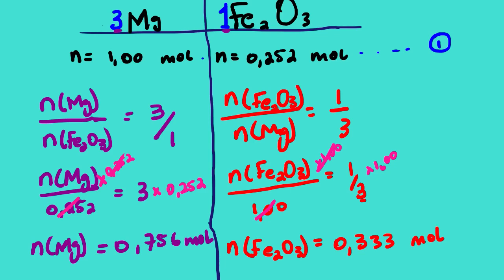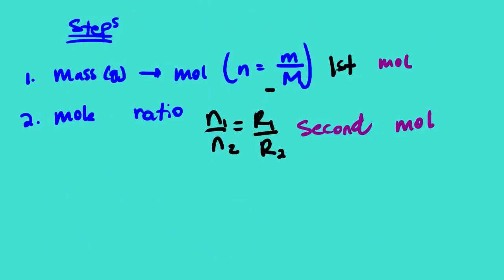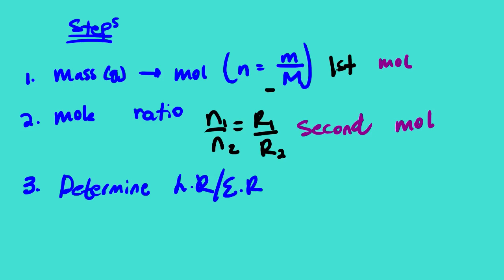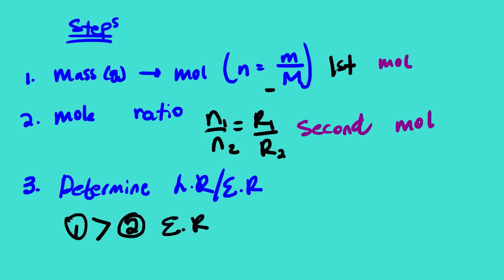Step 3 — determine the limiting reagent and the excess reagent. If the first number of moles is greater than the second number of moles, that substance is the excess reagent. If the first number of moles is less than the second number of moles, that substance is the limiting reagent.